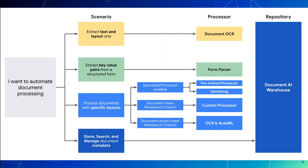When we talk about specialized parsers, every country has its own layout of driving licenses or passports. For example, for an Australian ID card or driving license, there is a specialized parser. For a French ID card, there is a specialized parser. So if a government department wants to parse hundreds of thousands of driving licenses, they can use this parser to extract the data. Behind the scenes, DocumentAI uses machine learning to process that data and give it meaning.